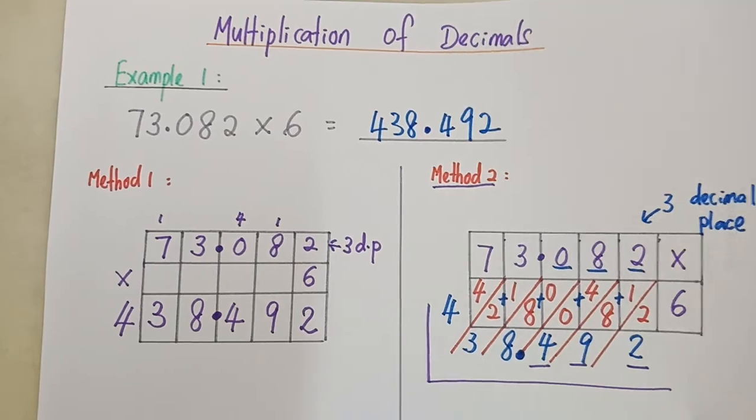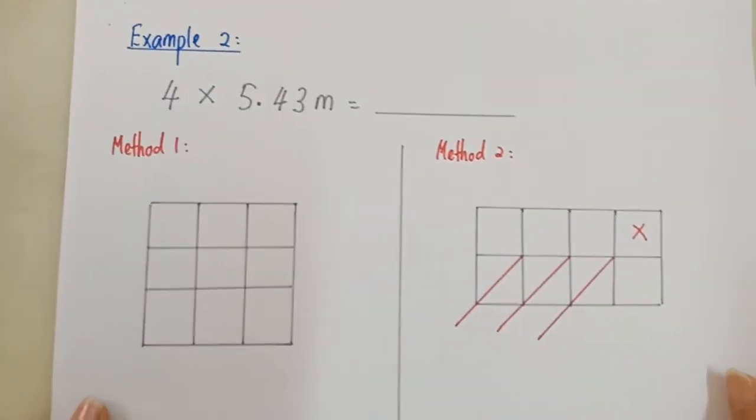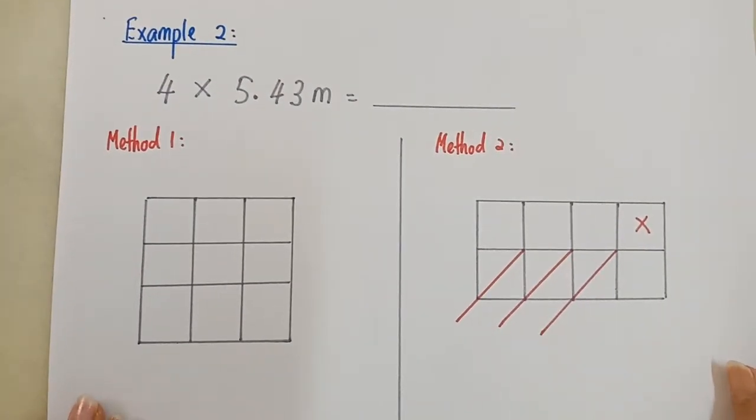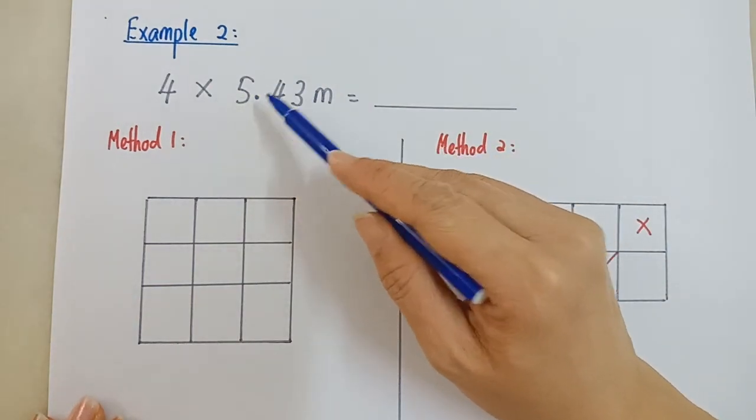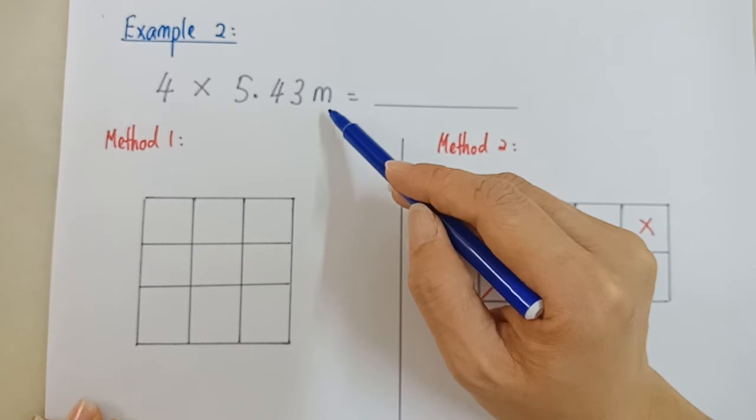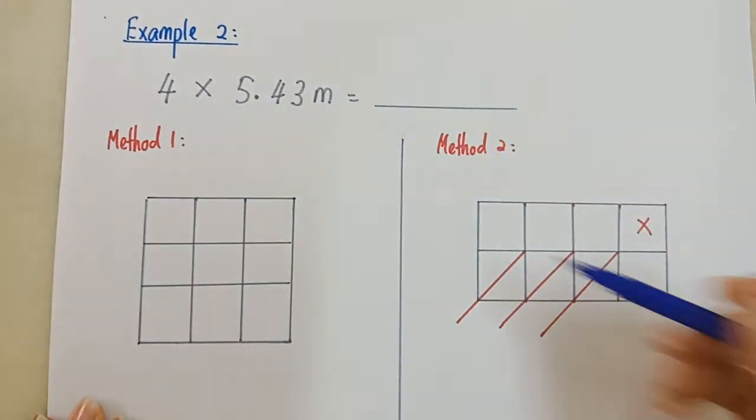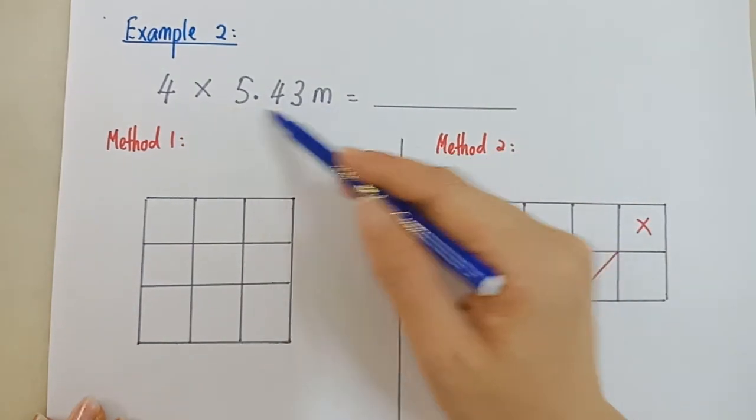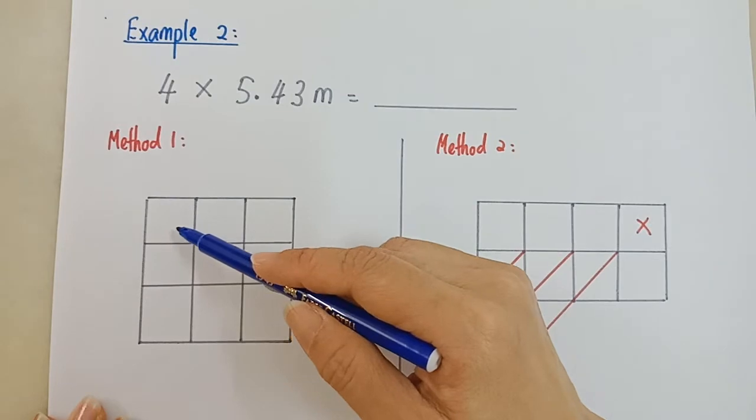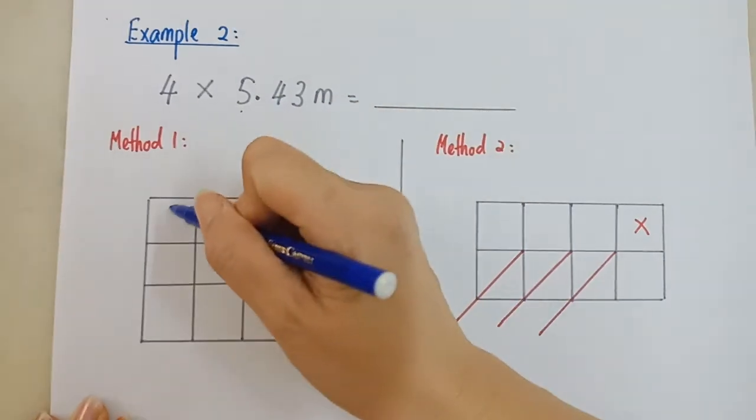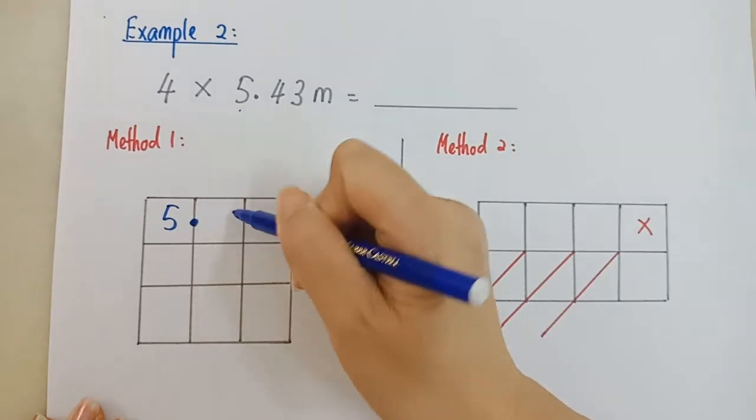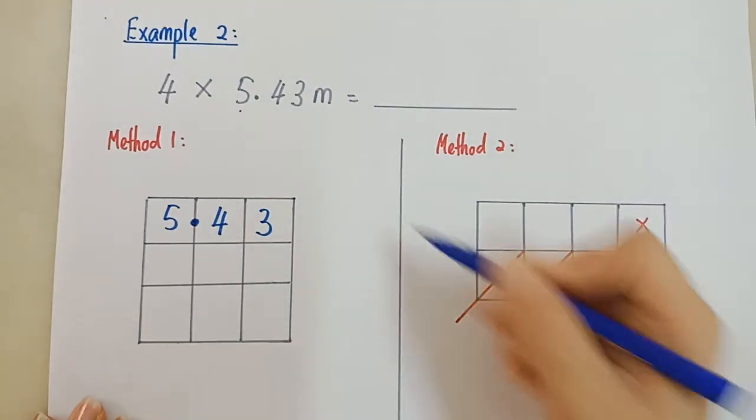Selesai. Now, example nombor 2. Contoh kedua. 4 times 5.43. M is meter.